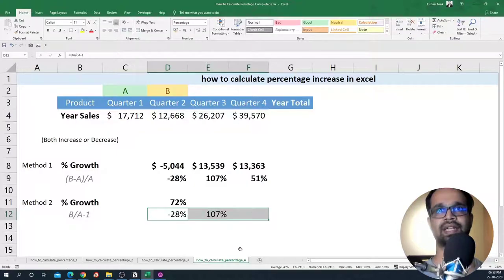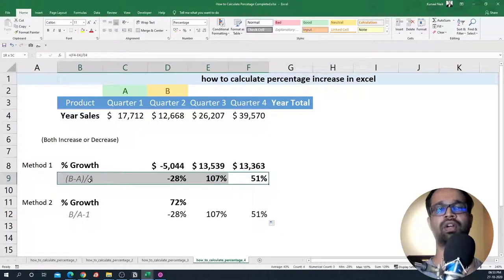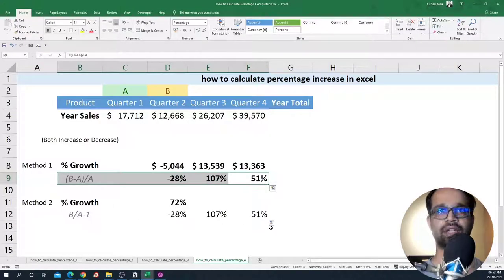If I copy it towards the right hand side, I will get the same percentage increase or decrease like we got in the first method. So these are the two methods that you use to calculate percentage increase or decrease within Excel.